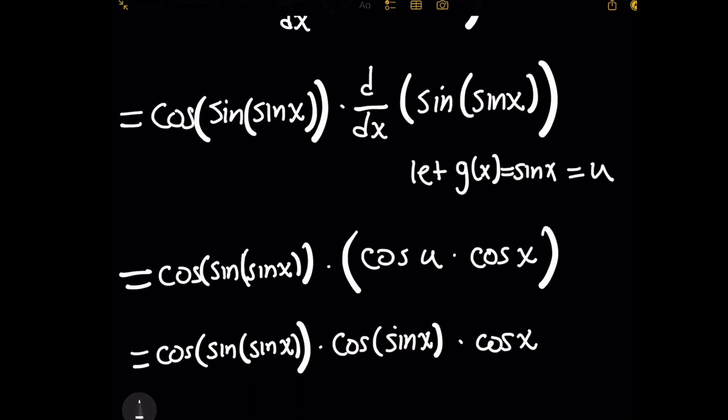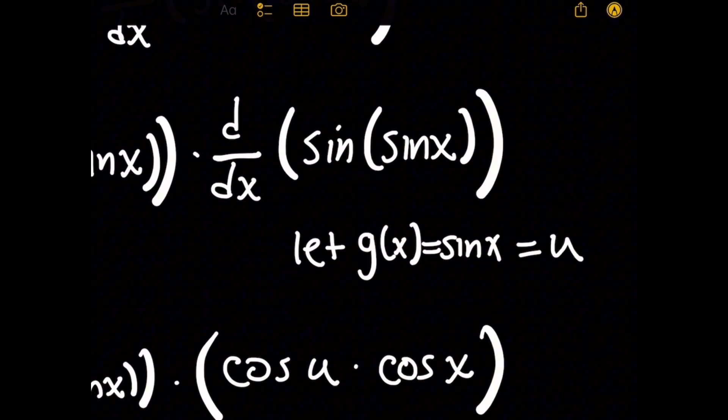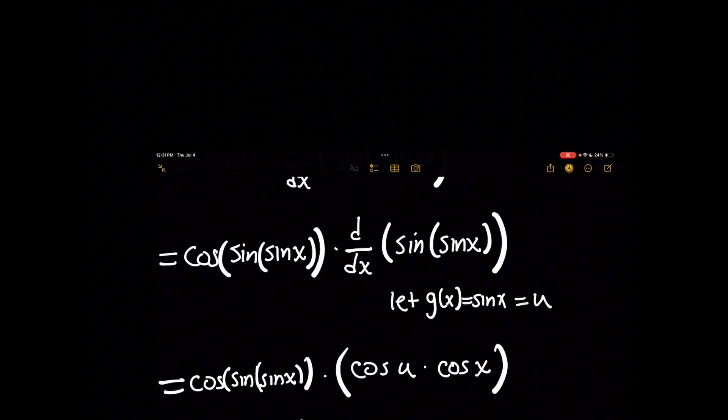So after assigning the inner function sine of x to g of x, I'm going to once again call that some variable u. And that's okay here because normally if you leave variables in the equation, you want to give this a new letter like w or z. But because on the left hand side here, I no longer have a u and I put everything back in terms of x,